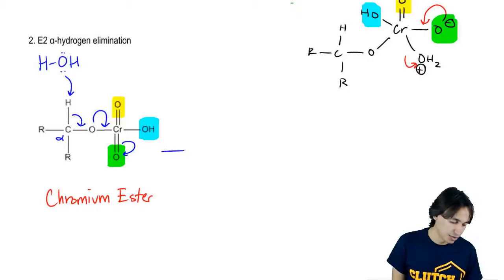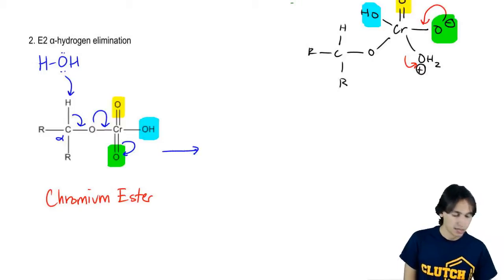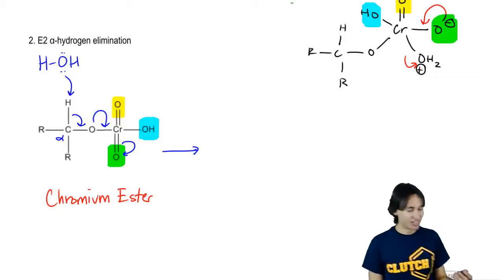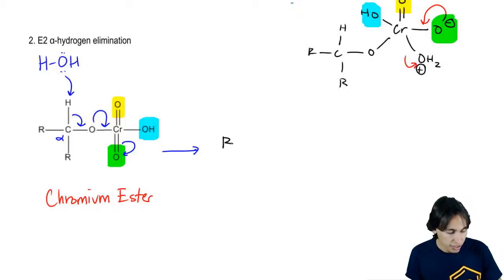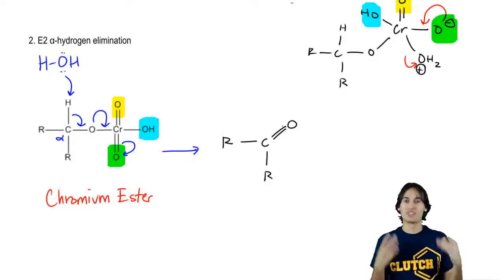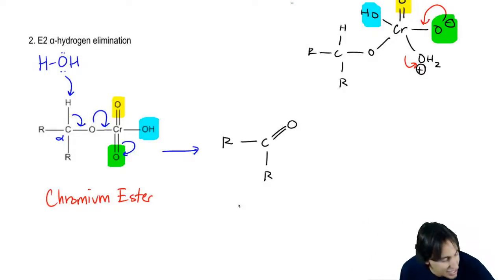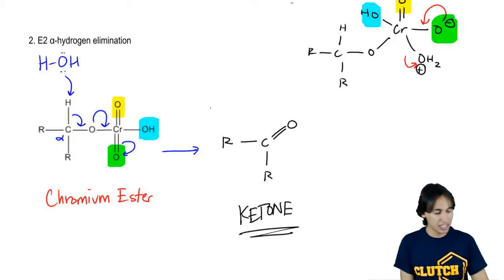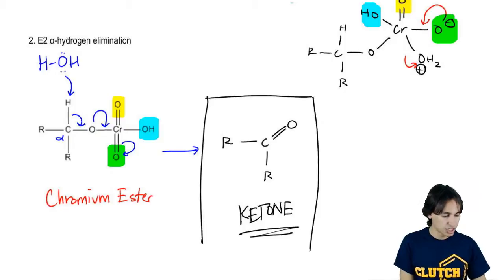So what is this going to give us? Man, what a mess. Well, it's going to give us what we want because now what I've got is R attached to C and an R. But what else do I have? Well, now I have a double bond O. What do we call it when you have a double bond O attached to a C and two R groups? This is a ketone. So we just figured out the whole mechanism of how you generate a ketone from oxidation.